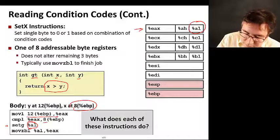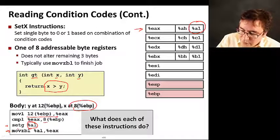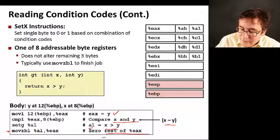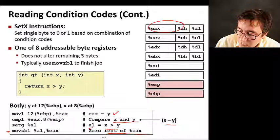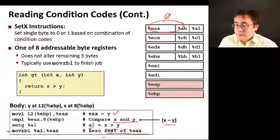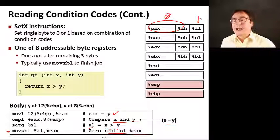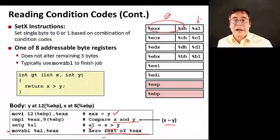And this instruction here just zeros the rest of EAX. So it makes this whole thing here zero. In the end, AL is going to be set to 1 if x greater than y, and it's going to be set to 0 otherwise.